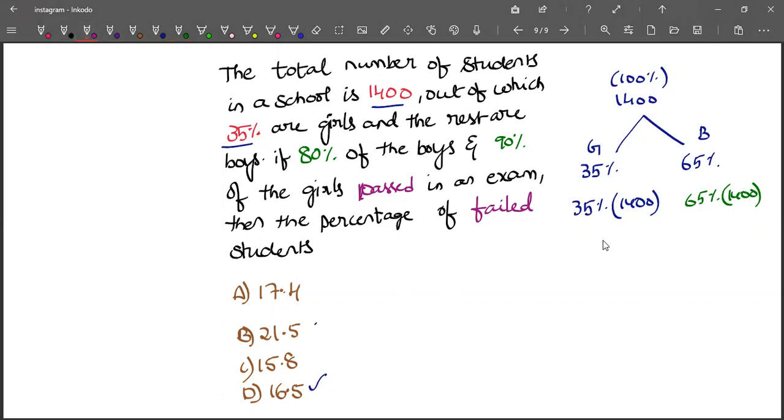We have provided the information about the percentage of boys and girls who passed in an exam. So 80% of boys and 90% of girls passed in an exam. But we were asked to find out the percentage of failed candidates.